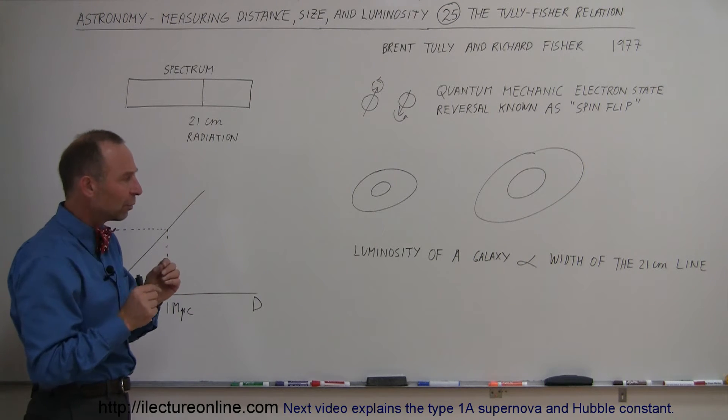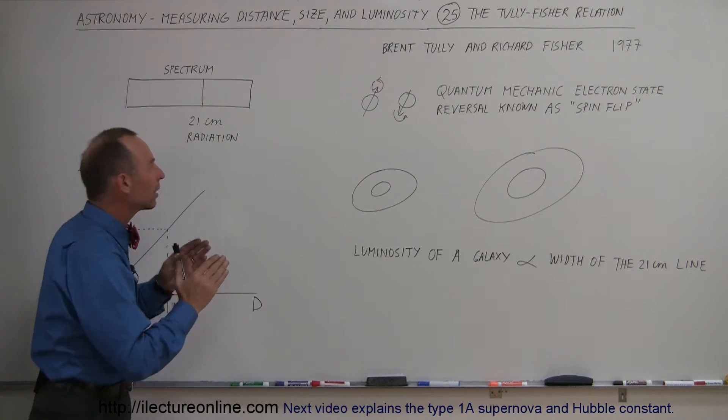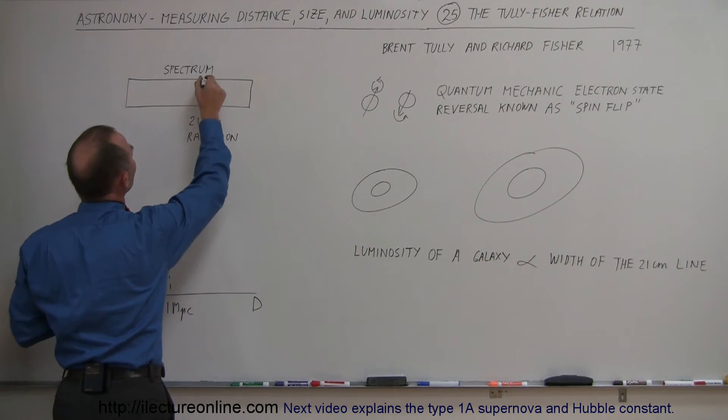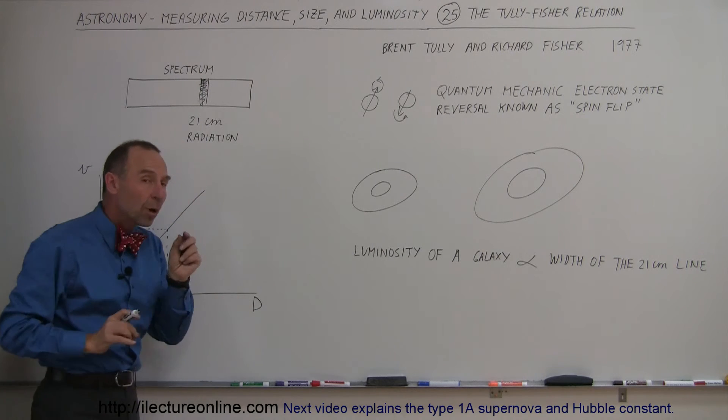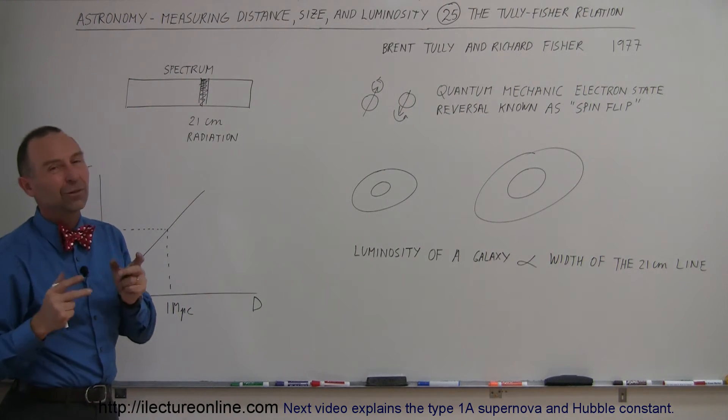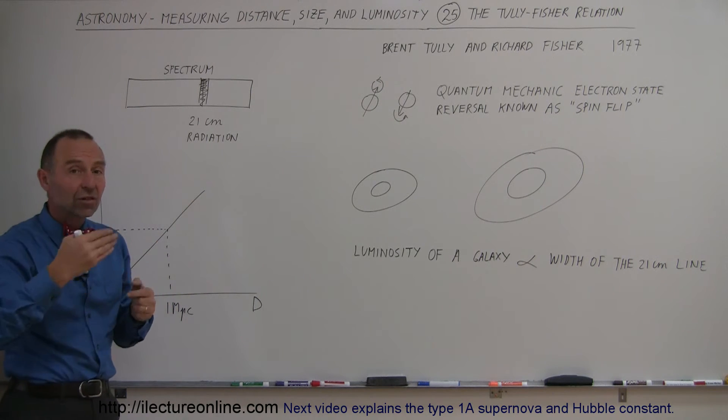What they found was that the larger the galaxy, the more luminous the galaxy is, the more that line is spread wide. For large galaxies, the line spreads out very thick. For smaller, less luminous galaxies, the line is much narrower. Those things are hard to measure, but nevertheless, they realized there was this linear relationship.